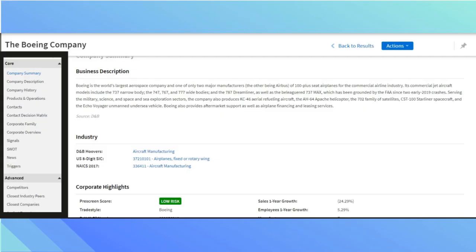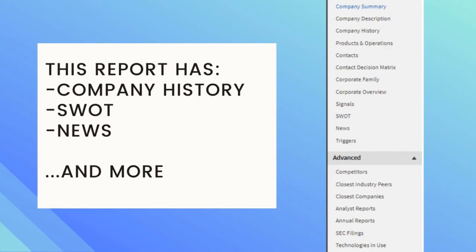Once you find the main parent company, on the left hand side you will find different categories. This particular report has information about the company history, a SWOT analysis, news, and more.